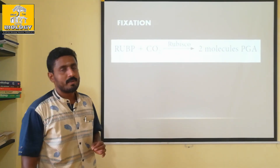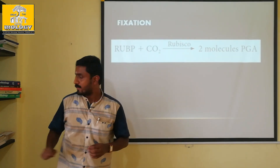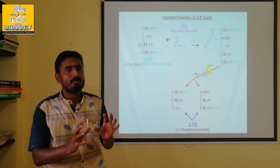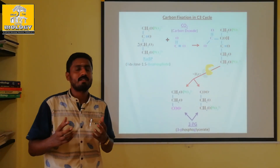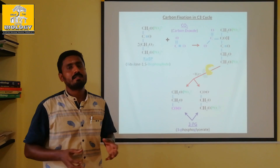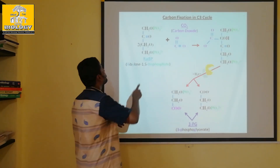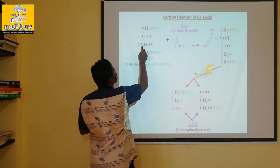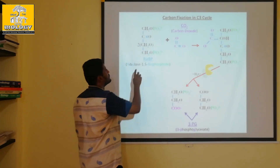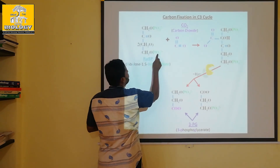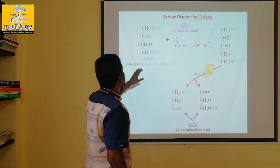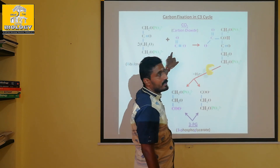RuBP is Ribulose-1,5-bisphosphate. It is a C5 compound — it has 5 carbons. Positions 1 and 5 carry a phosphate group, which is why it is called 1,5-bisphosphate. When CO2 combines with this C5 compound, it forms 3-Phosphoglycerate (3-PGA), a 3-carbon compound. Two molecules of 3-PGA are produced.